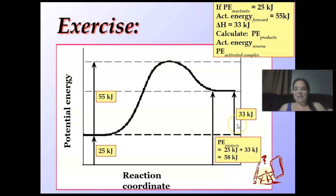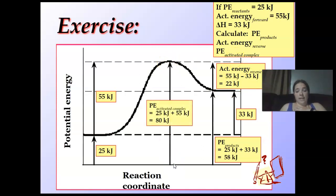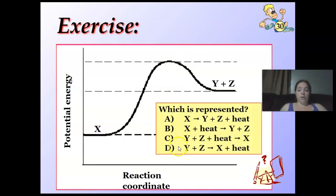My activation energy from here all the way up, it's going to be 50, or sorry, 22. Activation energy of the reverse, sorry, that's the reverse. Right here, it's 22. 55 minus 33 is 22 kilojoules. My activated complex, this whole thing, is 80. It's 25 and 55 is 80.